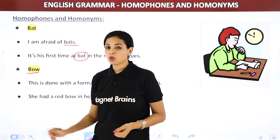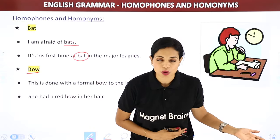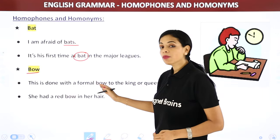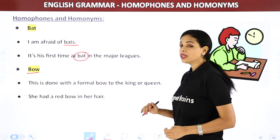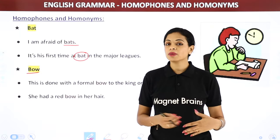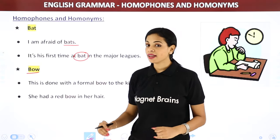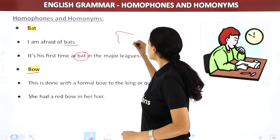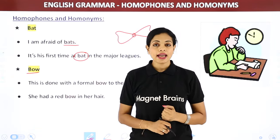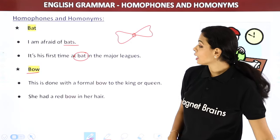Next: 'bow.' One meaning — to bow respectfully, like when a king or queen arrives, we bow down. 'This is done with a formal bow to the king or queen.' Another meaning — 'she had a red bow in her hair' or 'she had a bow on her tie' — meaning the decorative ribbon/knot shape.